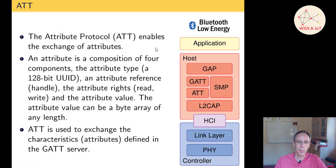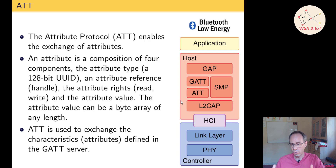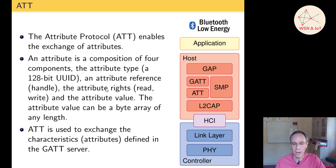The next module is ATT — Attribute Protocol — which enables the exchange of attributes. An attribute is a composition of four components: UUID, attribute handle, attribute rights, and attribute value. This is used for exchanging the characteristics defined in the GATT server.